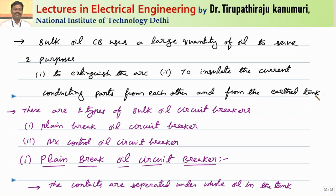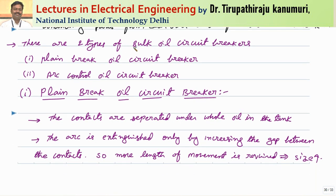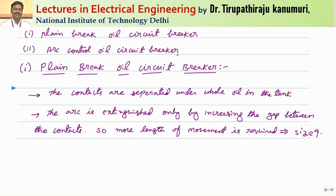The tank is generally made of iron and is earthed, so it provides insulation between the tank and the conducting parts as well as between the two live conductors at supply potential. For that purpose a huge quantity of oil is required. There are two types of bulk oil circuit breakers: the first invented is the plain break oil circuit breaker, and the second is the arc control oil circuit breaker, which was invented later and replaced the plain break type.